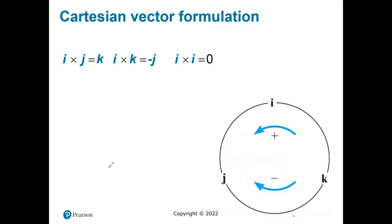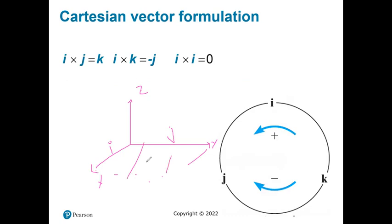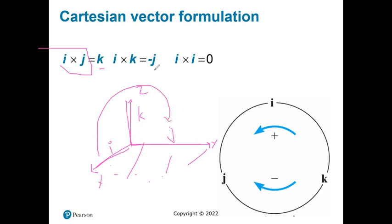For the Cartesian vector formulation, consider the 3D coordinate system with X, Y, and Z axes and unit vectors i, j, k. The cross product of i cross j equals k — the unit vector perpendicular to that plane. The cross product of i cross k equals negative j, because moving from i to k is clockwise. And i cross i equals zero, since sine of zero degrees is zero.